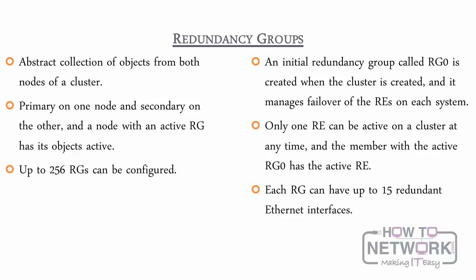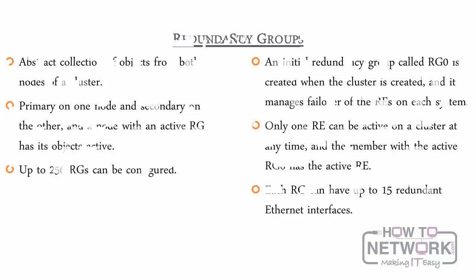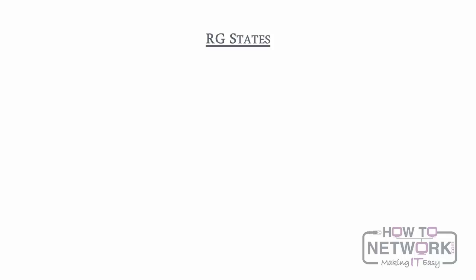A chassis cluster consists of the following components: cluster identification including cluster ID and node ID; redundancy groups or RGs; and chassis cluster interfaces such as FXP1, the control plane interface; XP0, the out-of-band management interface; FAB, the data plane interface; SWFAB, the switching plane interface; and the Wreath interface, the redundancy interface.